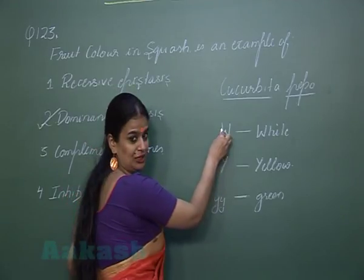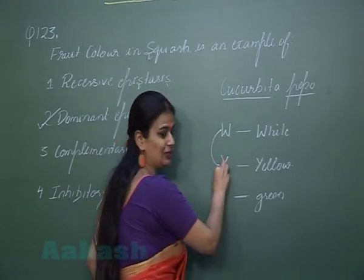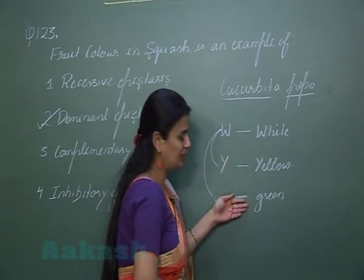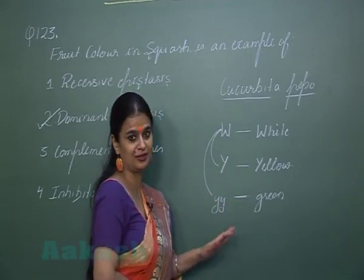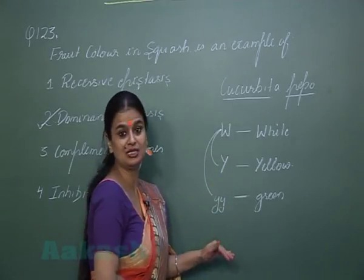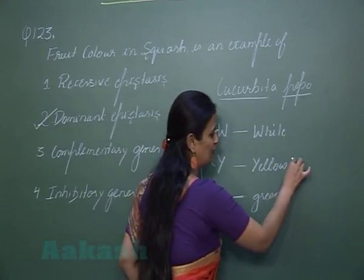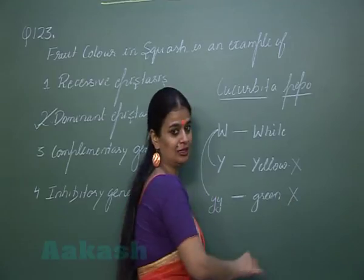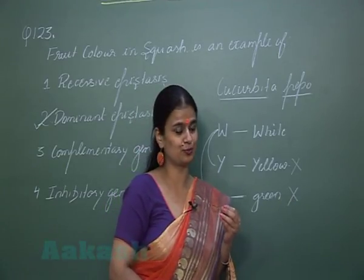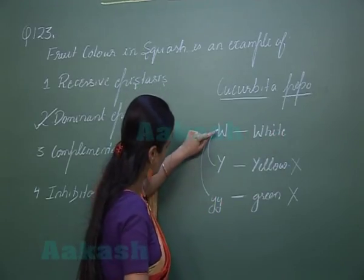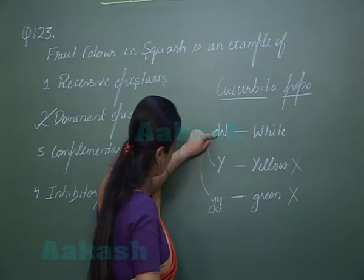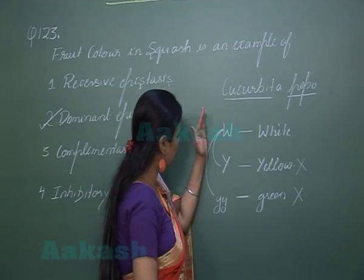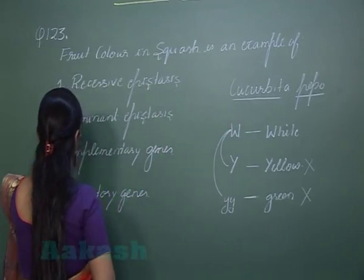If the dominant W gene is present along with the dominant Y gene or recessive Y gene, it will mask the effect of both dominant and recessive alleles. This means there will be no formation of yellow color and no formation of green color — the fruit produced will be white. So the dominant W gene is masking the effect of the Y gene, which is why it is called dominant epistasis.